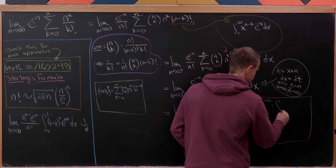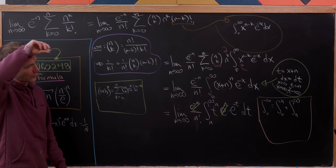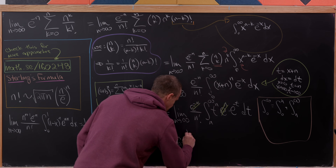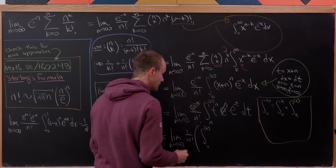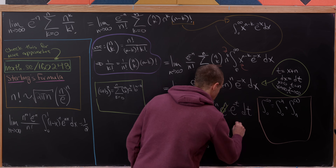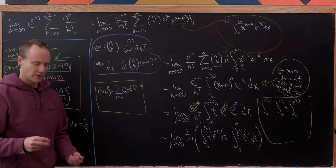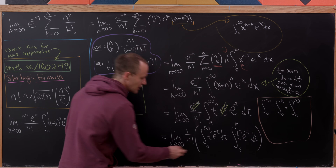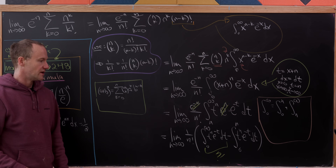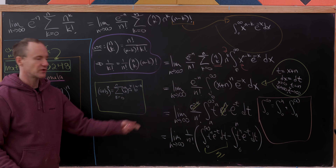Using the identity that the integral from 0 to infinity equals the integral from 0 to n plus the integral from n to infinity, we solve for the integral from n to infinity. This leaves us with the limit as n → ∞ of 1 over n factorial times [the integral from 0 to infinity of t^n e^{-t} dt minus the integral from 0 to n of t^n e^{-t} dt]. The first integral is exactly n factorial, canceling the denominator and leaving 1 minus the limit of the second term divided by n factorial.